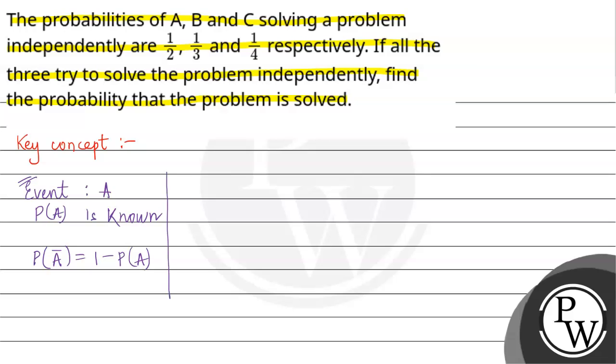Now, the other important concept here is probability that the problem is solved. That will be 1 minus probability of A bar times probability of B bar times probability of C bar. This represents not solving.